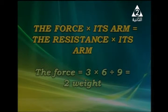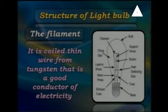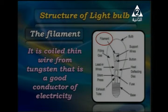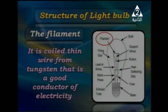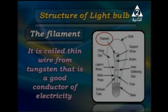Now we review the structure of the light bulb. The filament is the first key part — it is a coiled thin wire made of tungsten, which is a good conductor of electricity. The filament is the main part of the light bulb that converts electric energy to heat energy and then to light energy.